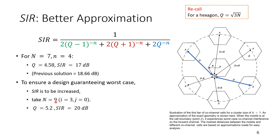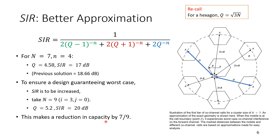Using the more accurate design expression, N = 7 is not good enough and we must use N = 9. We cannot use N = 8 because only specific values of capital N are valid to maintain equal distance from all interfering cells. Going from N = 7 to N = 9 means a capacity reduction by a factor of 7/9 — we reduced the interference and improved the signal, but at the cost of reduced capacity.